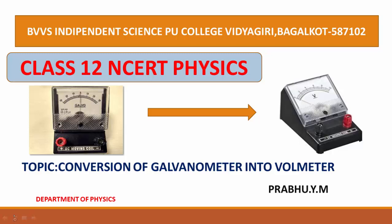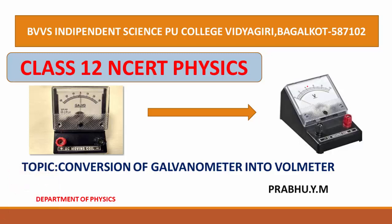Voltmeter is an instrument used to measure the potential difference. In the last class, I discussed the conversion of galvanometer into ammeter. Now in this class, I am going to discuss the conversion of galvanometer into voltmeter. The galvanometer is the device which is used to measure the small amount of electric current, in the order of microampere.